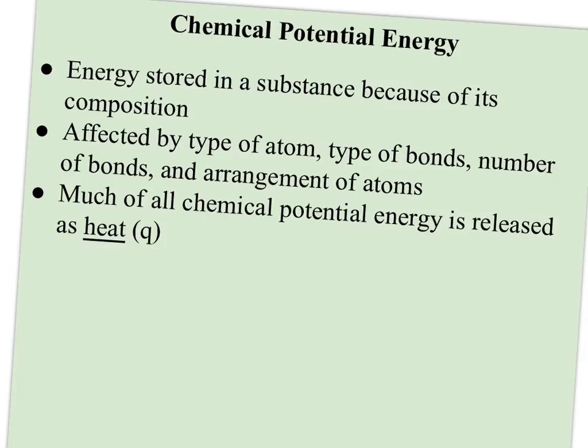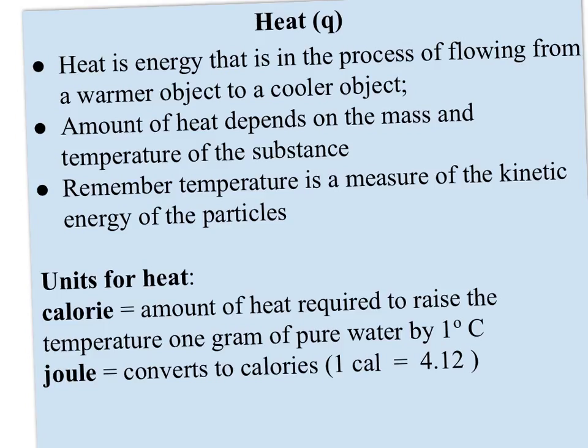Heat has the abbreviation Q. Why Q for heat? Because heat was really poorly understood when scientists were first working with this, and they just referred to it as quantity - the quantity of heat being transferred. Heat is energy that's in the process of flowing from a warmer object to a cooler object. If you put your hand on something and it feels warm to you, heat is flowing from that object to you. If it feels cool, then you're losing heat to that object. Heat always flows from warmer to cooler.